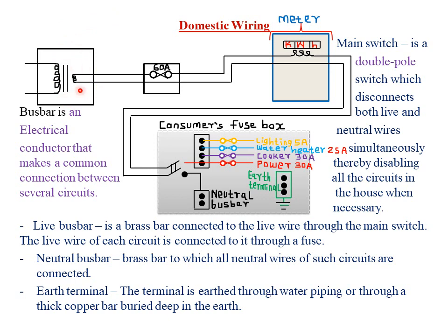Today we are looking at domestic wiring, which starts from the local transformer — actually a step-down transformer, because it has more turns in the primary coil than in the secondary coil. From there, the particular voltage or current flows through a fuse of about 60 amperes, then to the meter.